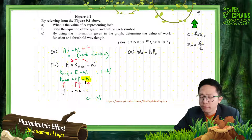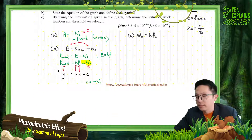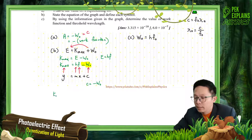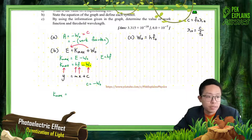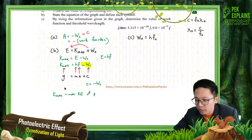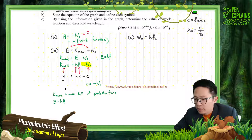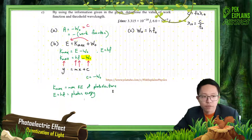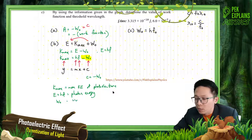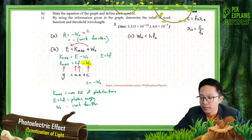This is the work function — negative W0. Now, state and define each symbol. Kmax is the maximum kinetic energy of the photoelectrons ejected. What is HF? This is the energy of the photon, or just say photon energy. And W0 is the work function.